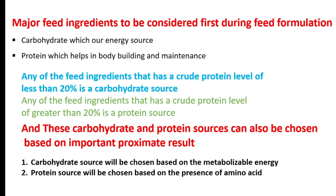The next thing we are going to look at is the major feed ingredients to be considered first during feed formulation. We have carbohydrate, which is our energy source, and protein, which helps in body building and maintenance. These two major feed ingredients can be easily identified and differentiated based on their crude protein content.